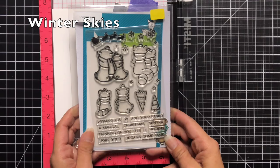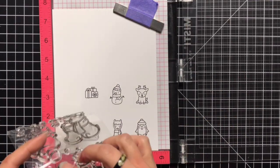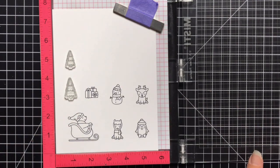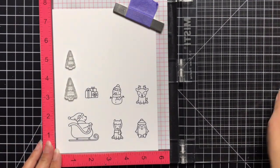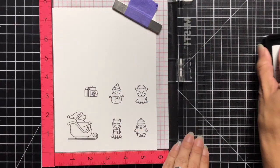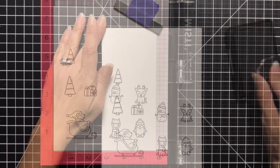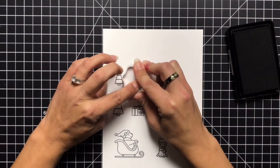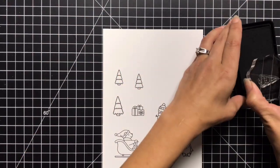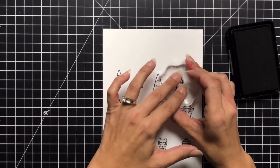And then I just needed some trees. So I'm using these two trees off of Winter Skies. Since I already have this loaded in my Misti, I'm just going to go ahead and stamp these down. But then I do end up taking my cardstock out of the Misti tool and using an acrylic block because I wanted a few trees to have a little grouping of them. And it was just easier to do it this way than to rearrange my paper or the stamps in my Misti tool.